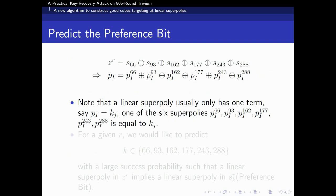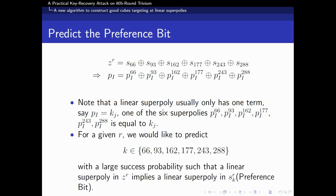Then, the problem turns into how to pick up a proper internal state from the six internal state bits in the output function. Since the output function is a summation of six internal state bits, the superpolys of I in z could be taken apart into six ones. Note that a linear superpoly usually has only one term, say p_I is equal to k_j. One of the six superpolys is equal to k_j. Hence, for a given r, it is necessary to predict the k_j with a large success probability such that a linear superpoly in z_r implies a linear superpoly in s_{kr}. In our paper, s_{kr} is called the preference bit.